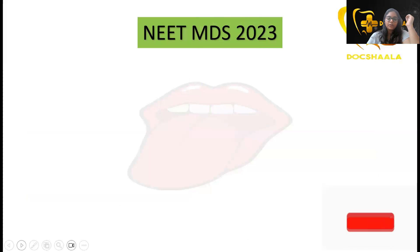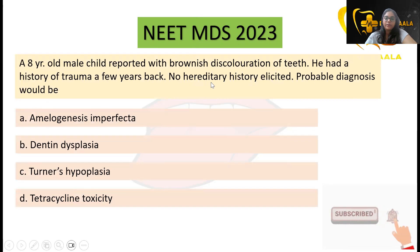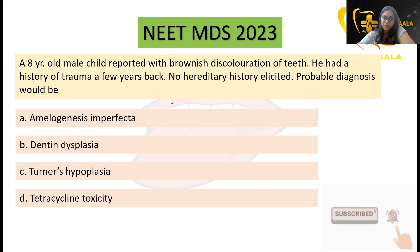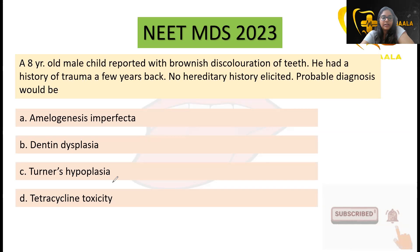The exam question asked: an eight-year-old male boy reported with brownish discoloration of teeth and a history of trauma a few years back, with no hereditary history. Since there is no hereditary history and the child has brownish discoloration with a trauma history, we can conclude the tooth is a Turner's tooth, and option C is the correct answer.